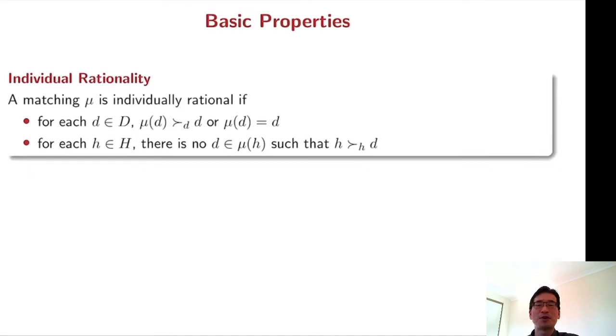Now I'm going to formally define the basic properties. Individual rationality requires that each doctor should be matched to a hospital which she prefers over remaining unemployed.